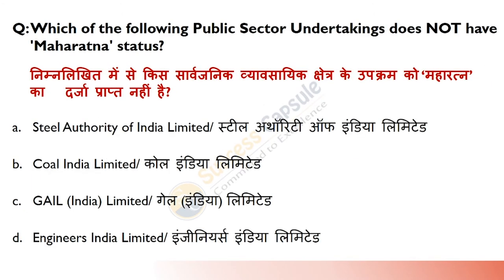Which of the following public sector undertakings does not have Maharatna status? Answer is D — Engineers India Limited. Baaki teeno — SAIL, Coal India Limited aur GAIL — yeh saari Maharatna companies hain. Engineers India Limited Navratna hai.